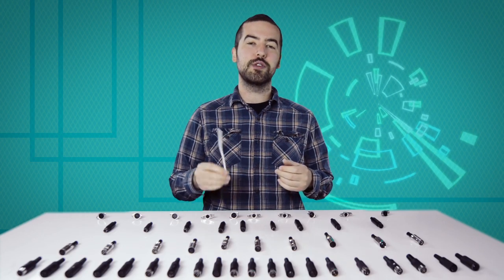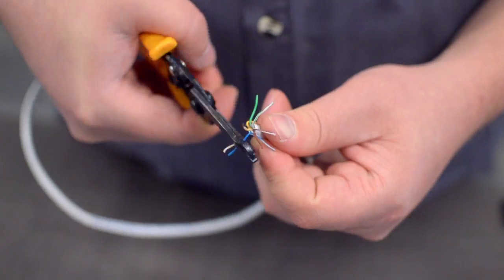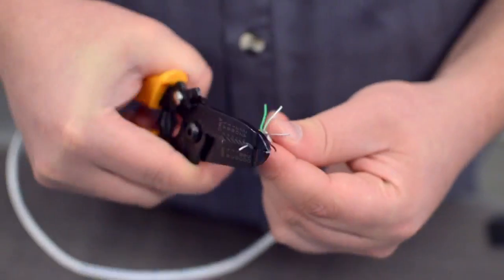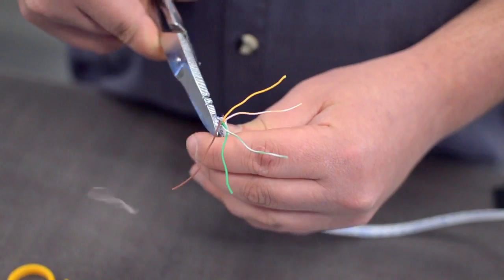For this example, we will be using CAT 5E cable. You will also need to strip the individual conductors. Trim off any additional conductors if needed.